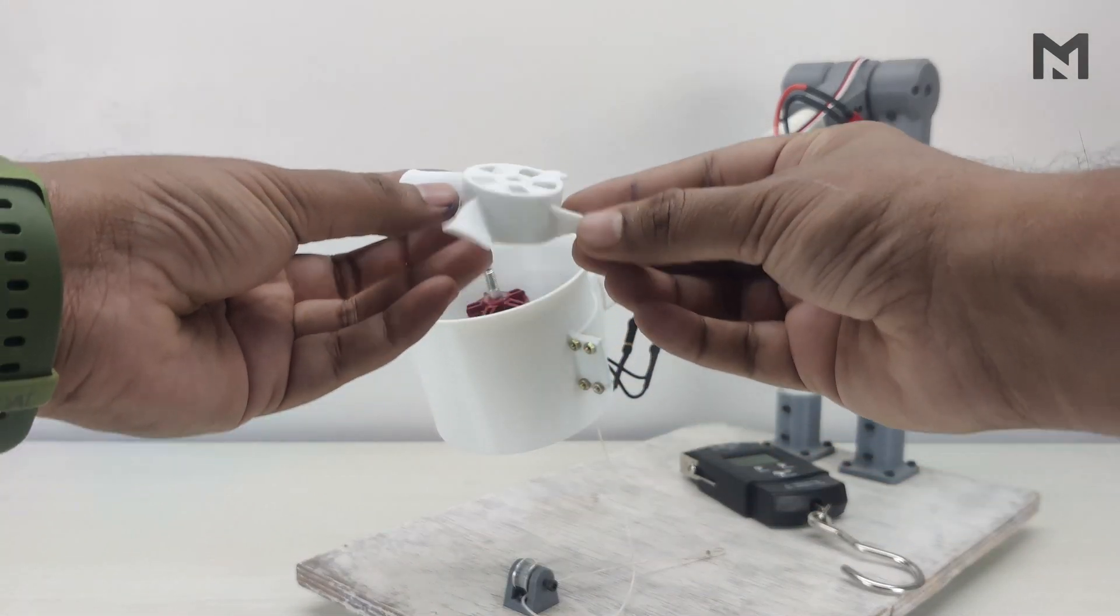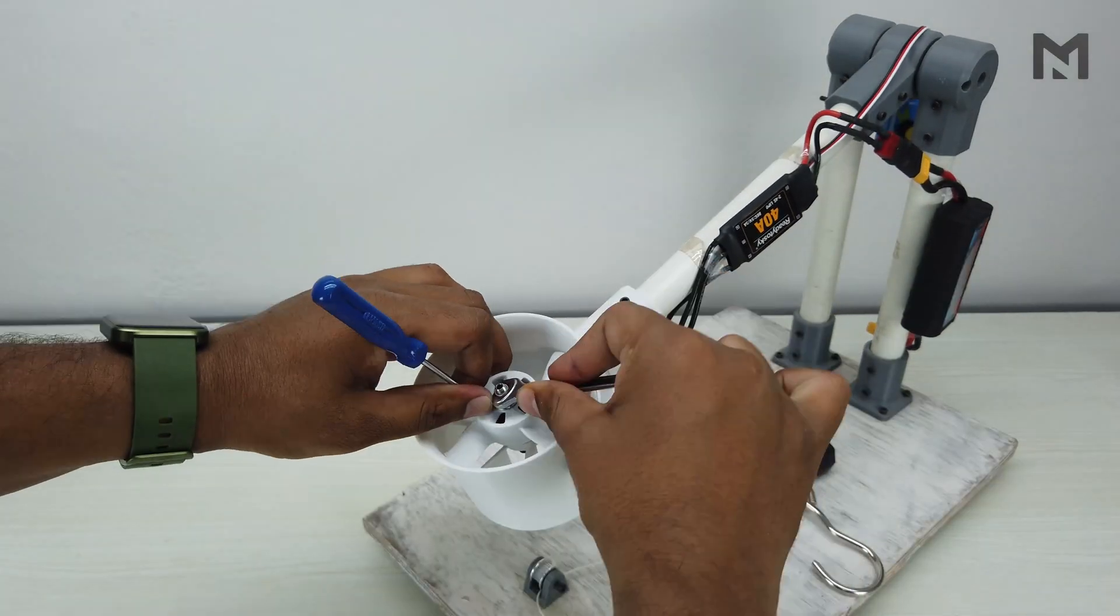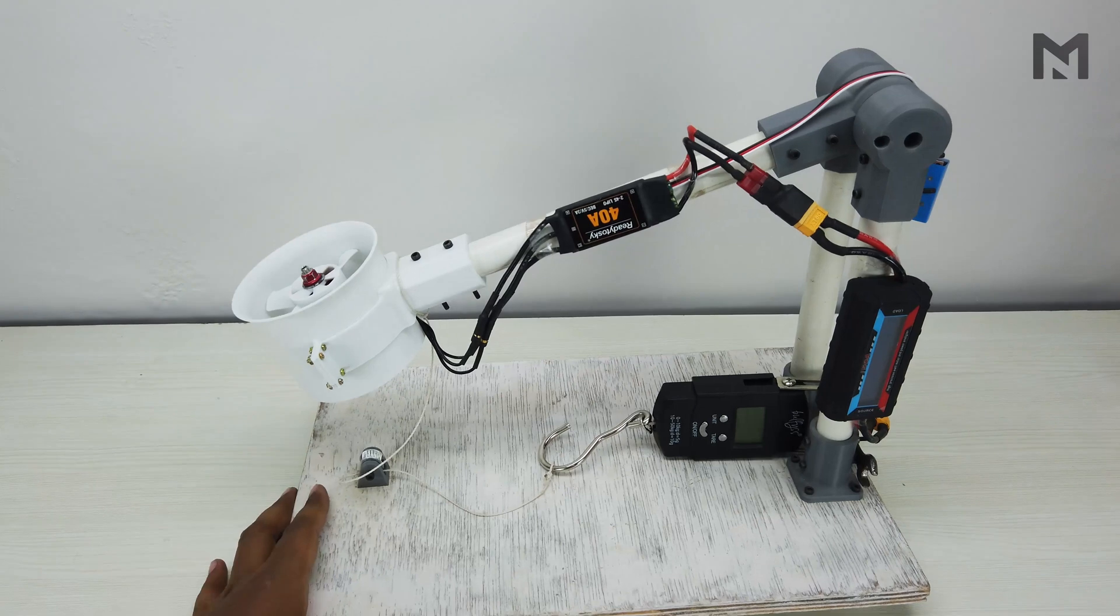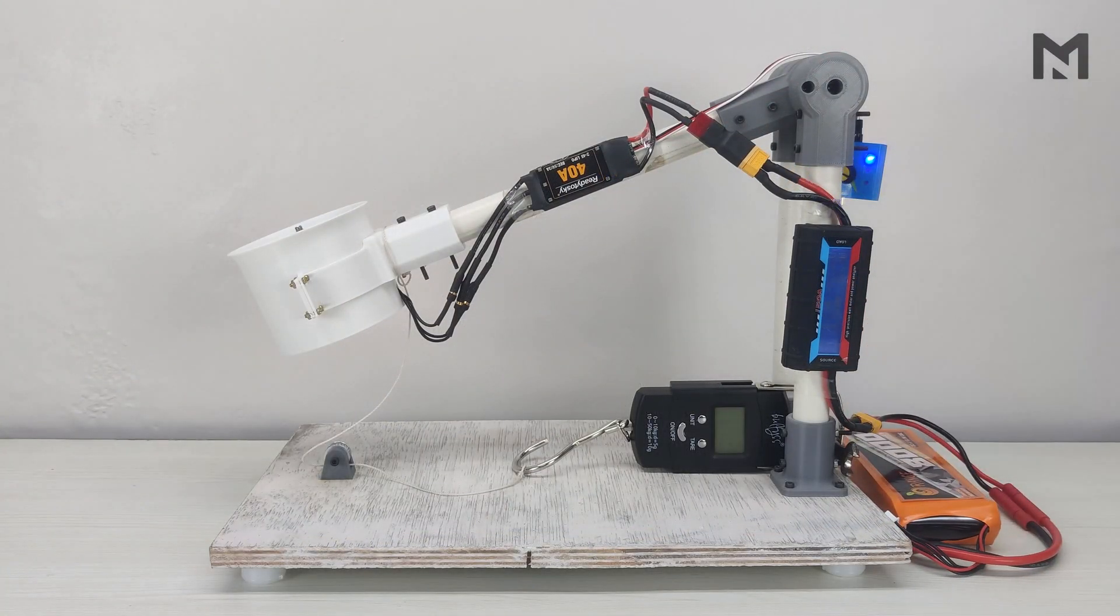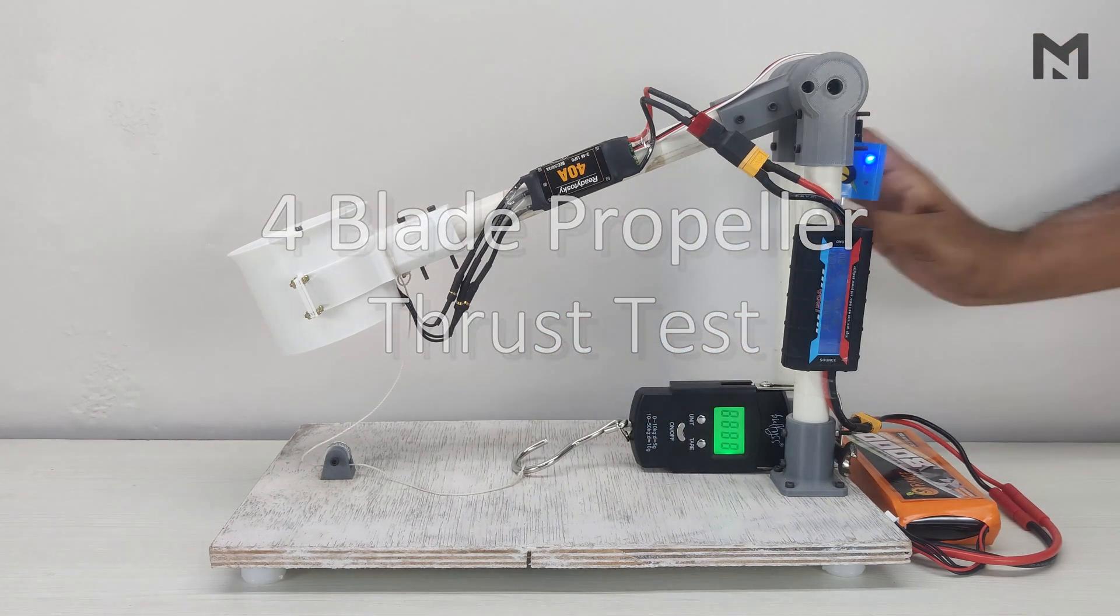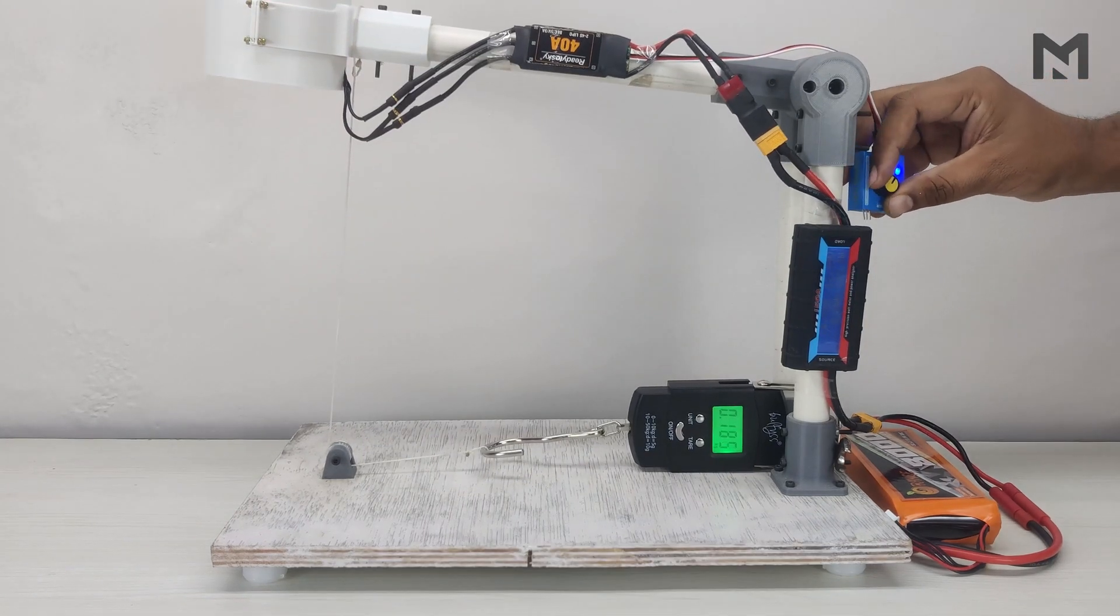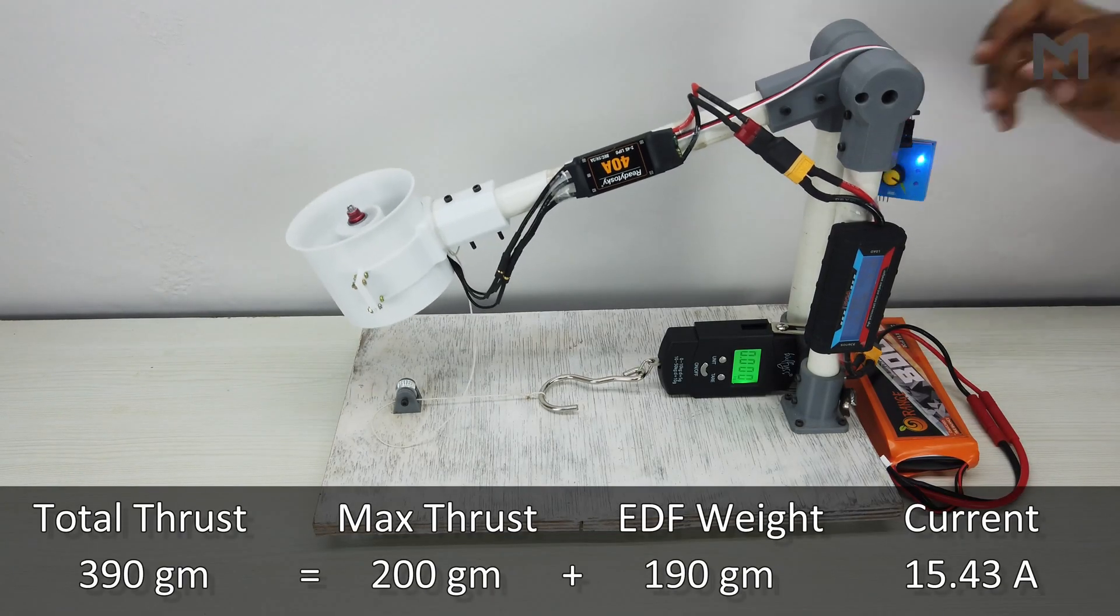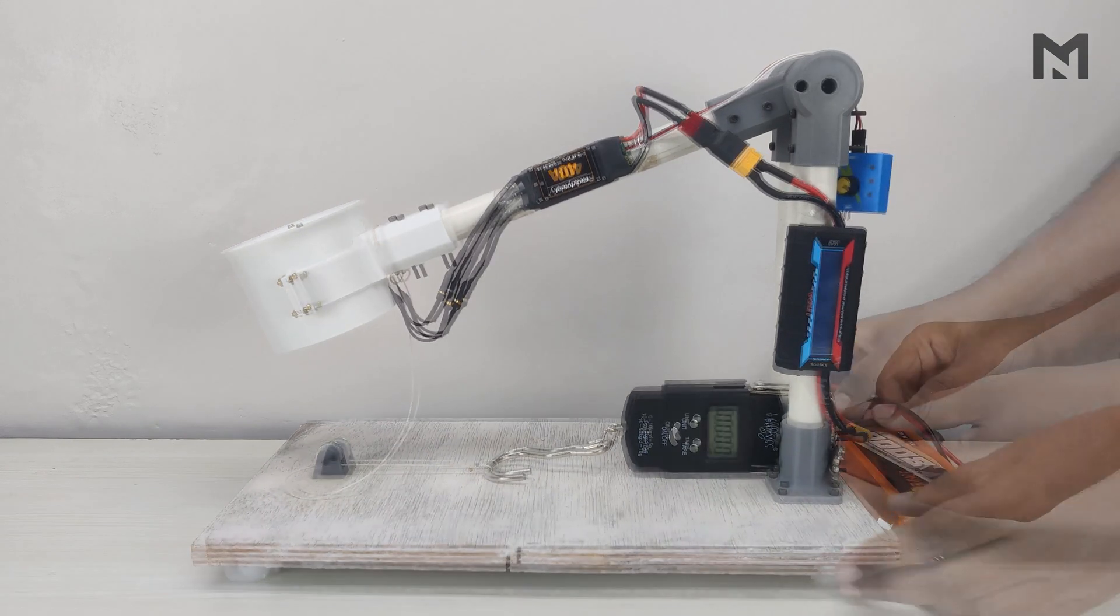Now it's time to test the 4 blade propeller. Mount it in its casing. Now I have connected the battery and started the test. At 15.43 Amperes, we get a total thrust of 390 grams. Now I will change the battery and check the thrust.